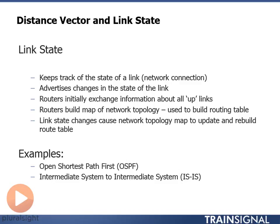If a link state changes, it causes the topology map to update and then you rebuild the routing table. Two examples of these routing protocols are Open Shortest Path First and Intermediate System to Intermediate System.